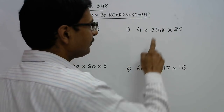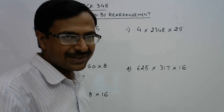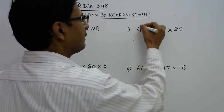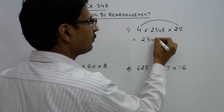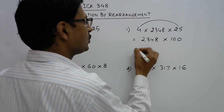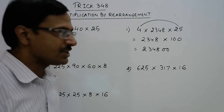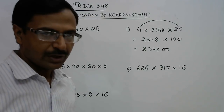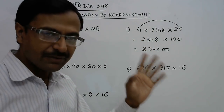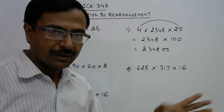For example, 4 into 25 is 100 — a round figure. So you multiply those two numbers and just write 2348 as it is. 2 into 25 into 4 is 100, so you don't need to multiply by 100 separately — the product of those three numbers is just 2348 followed by two zeros. This is the method of rearrangement: you don't blindly multiply the first two numbers and then the third; instead you spot the pair that gives a round figure.